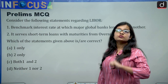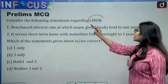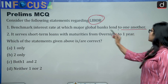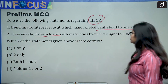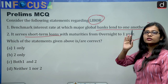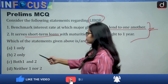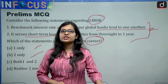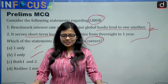Finally, here is a prelims MCQ. Consider the following statements regarding the LIBOR rate: (1) It is a benchmark interest rate at which major global banks lend to one another. (2) It serves short-term loans with maturities from overnight to one year. You need to identify the correct statements. Options: one only, two only, both one and two, neither one nor two. Try to solve and give the answer in the comment section. That's all for today — keep reading and keep writing.